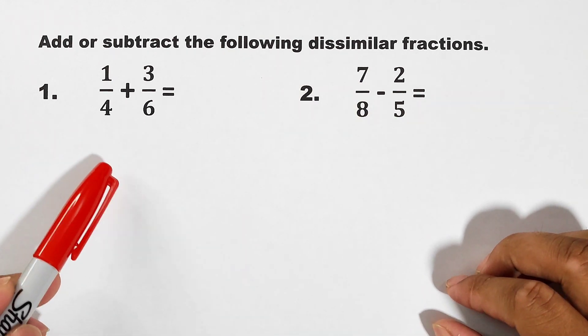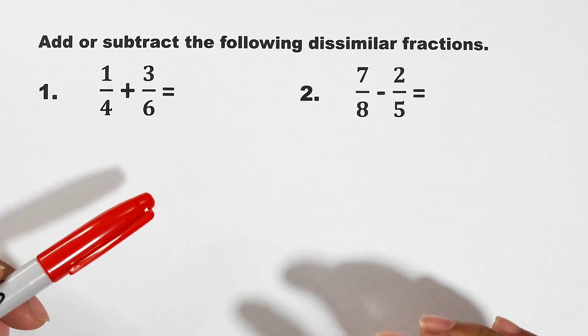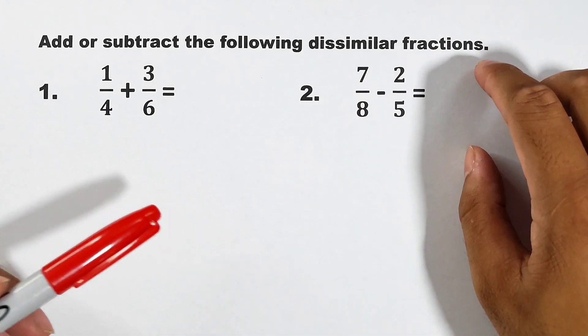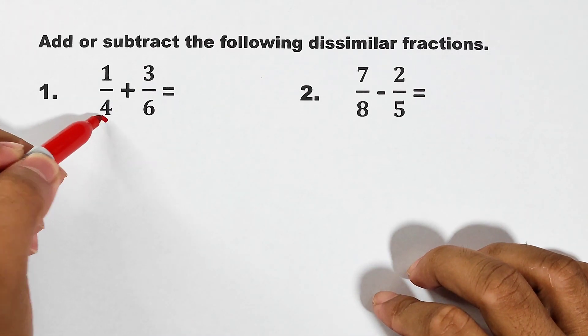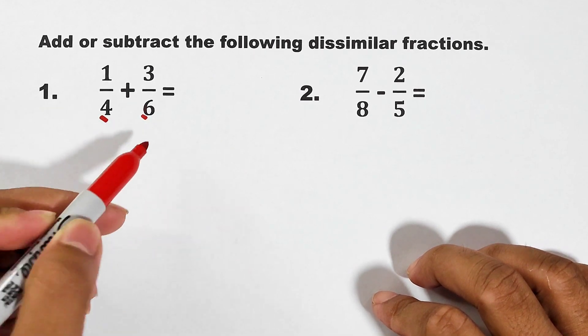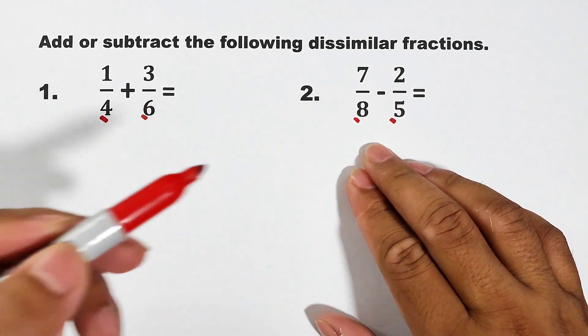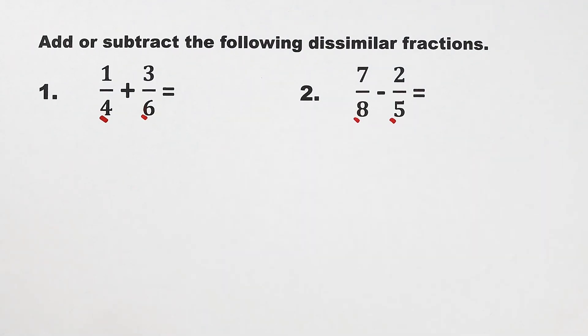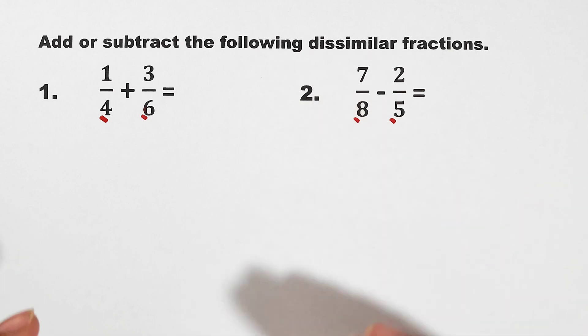So what we have here is first, second, and later on we still have two more examples. Ngayon, ang reason bakit sila tinawag ng dissimilar fractions is simply because they have different denominators. This one is 4 and 6, while the other examples have 8 and 5 as their denominators. So medyo mahirap nga talagang mag-add or subtract ng fractions kapag magkaiba ang denominators.